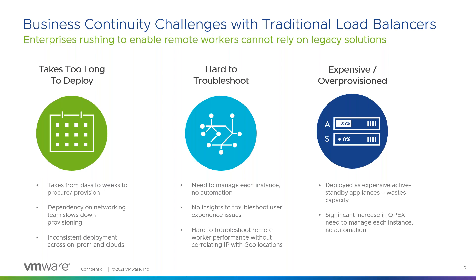Before we get into what Avi is and what we do, I want to focus on some business continuity challenges exposed in the last year thanks to the pandemic. Enterprises in the February-March timeframe and beyond were rushing to enable remote workers as parts of nations went into lockdown. A few challenges our enterprise customers faced: first, traditional load balancers — typically appliances — take too long to deploy. From procurement to shipping to provisioning in your data centers is a matter of weeks, possibly two to four weeks or more, and longer if there is a supply chain issue.